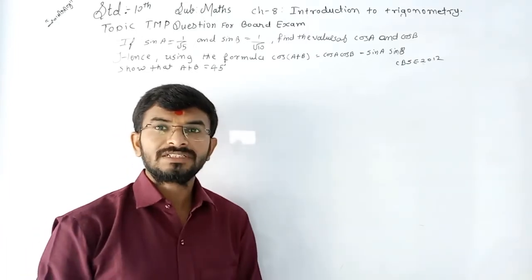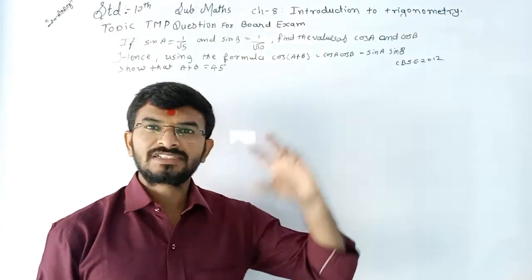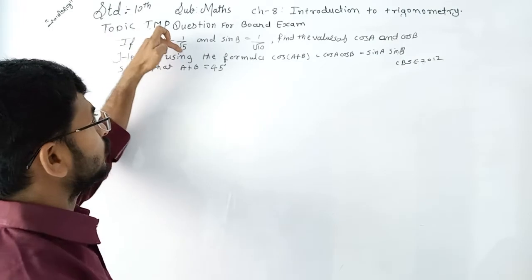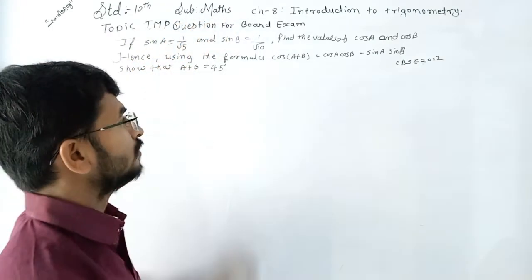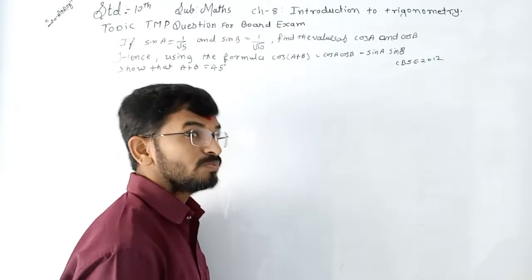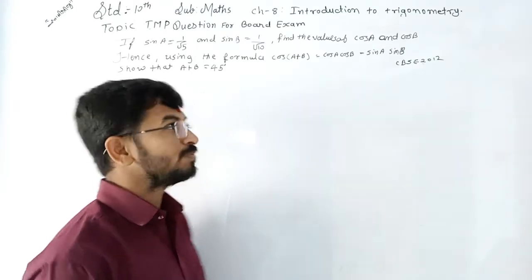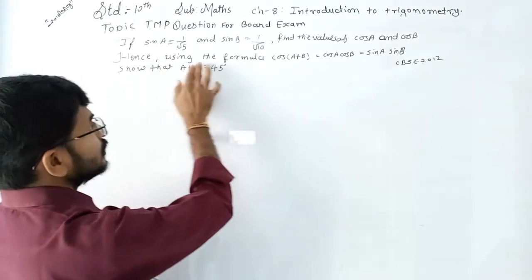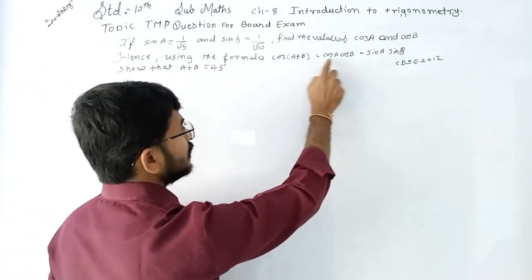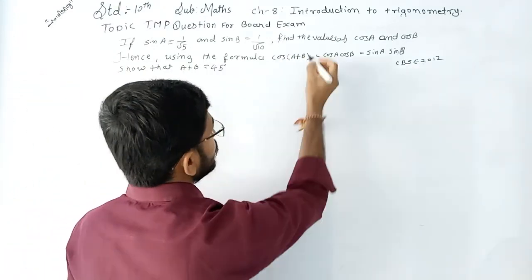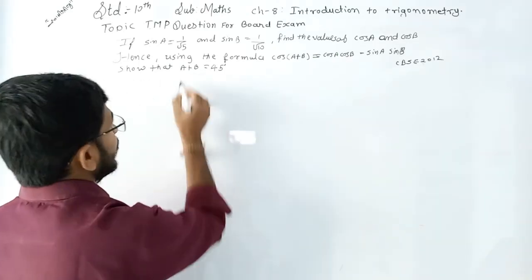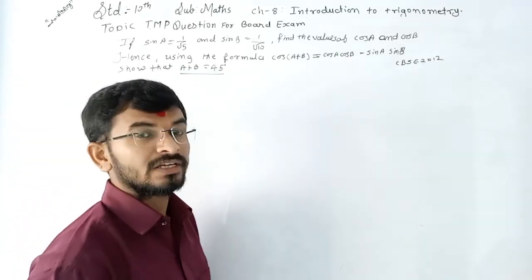It is an important and very tricky question. If sin A is equal to 1 upon root 5, and sin B is equal to 1 upon root 10, find the value of cos A and cos B. And hence, using the formula cos(A+B) = cos A cos B − sin A sin B, show that A + B is equal to 45 degrees.